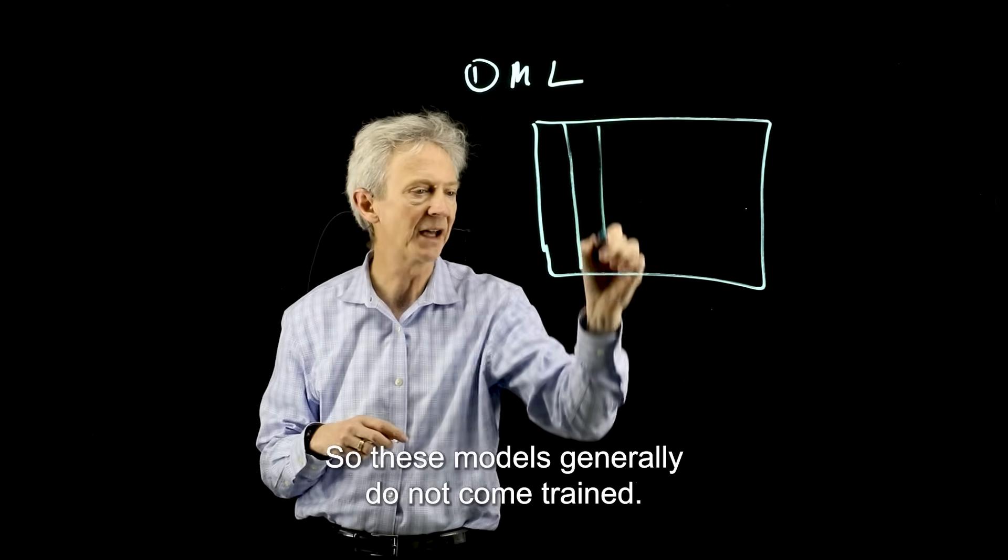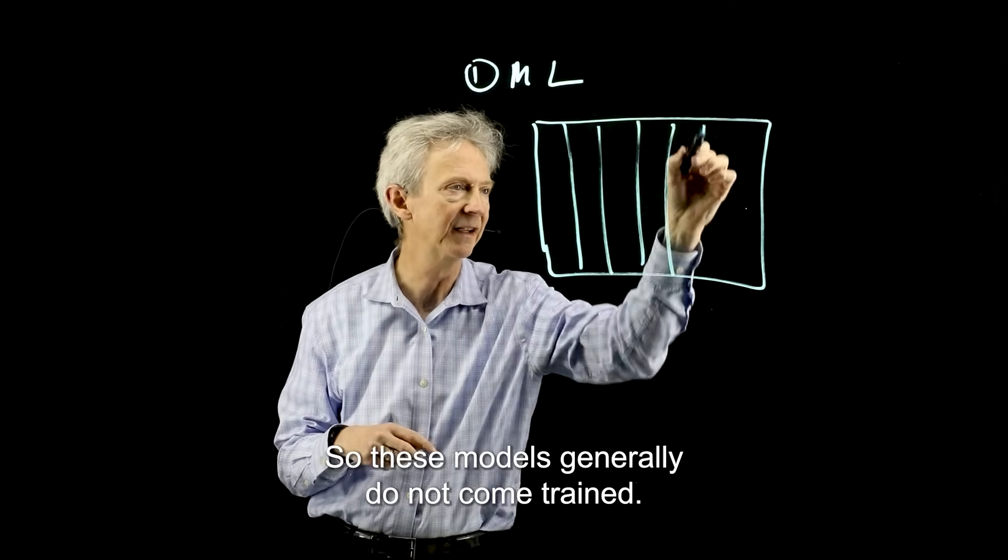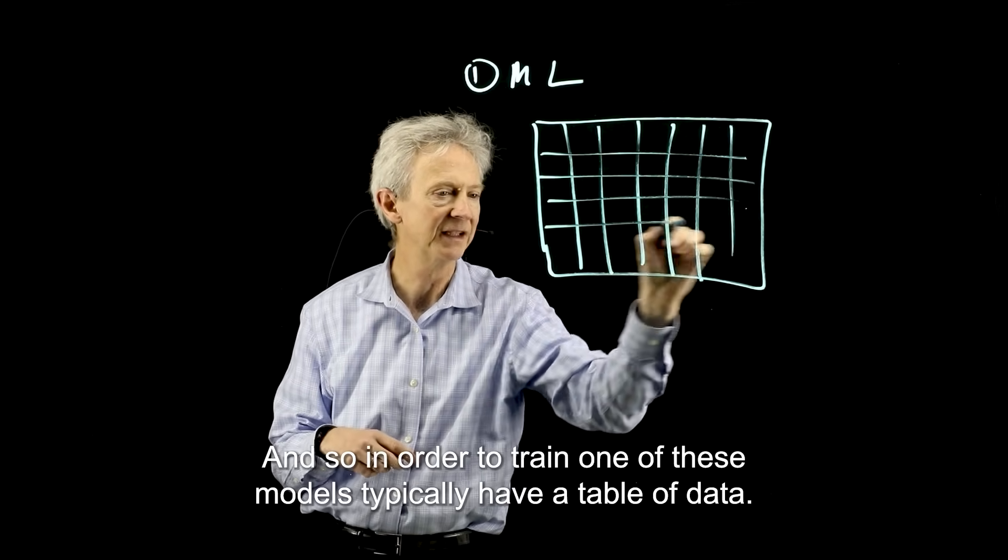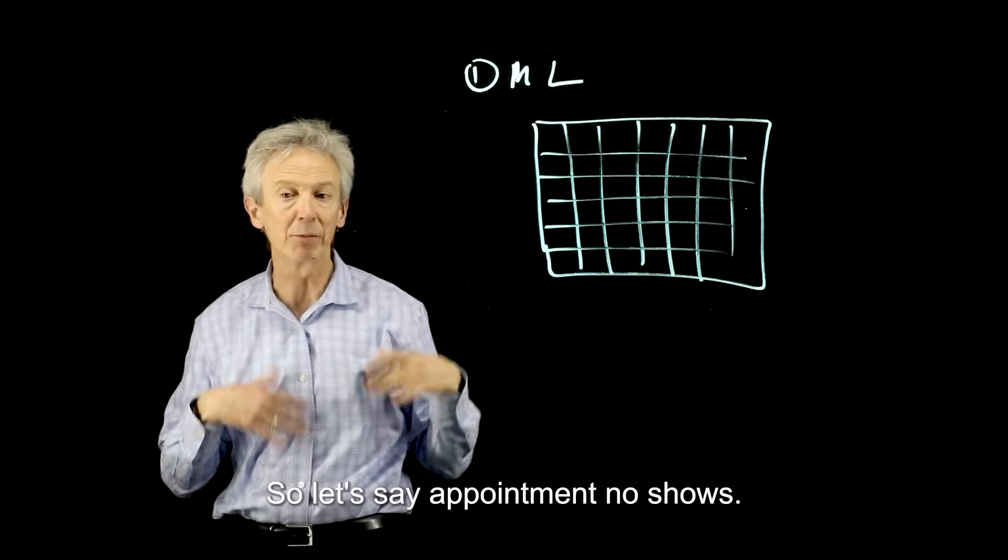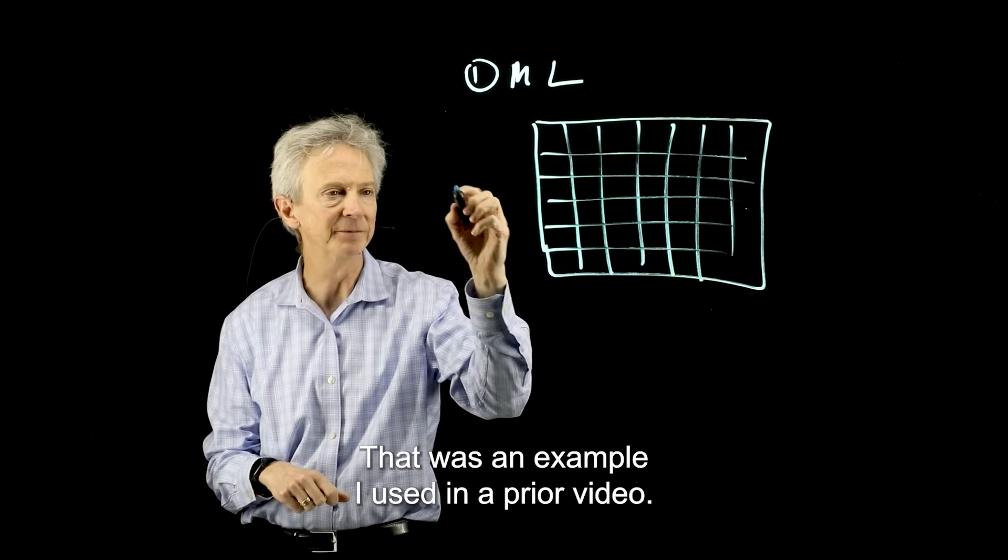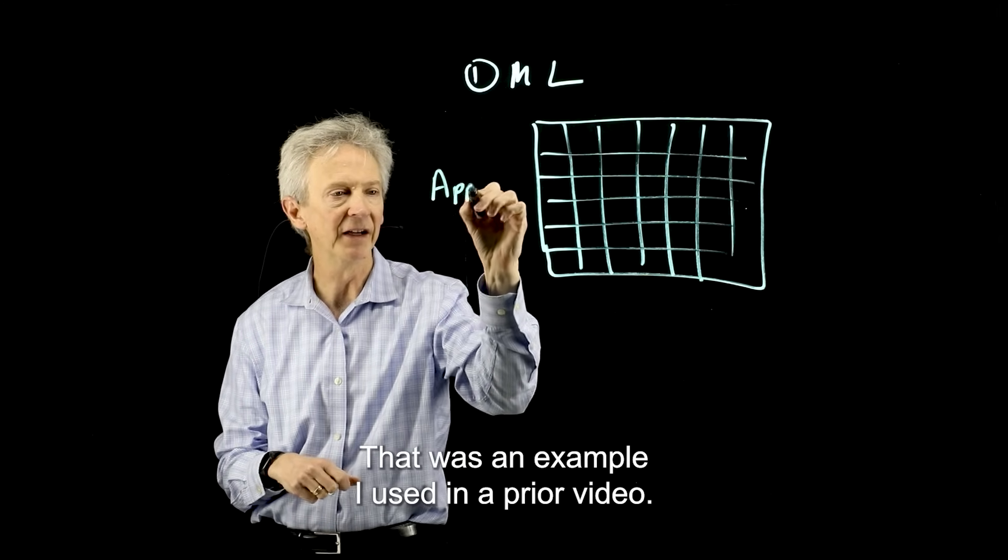These models generally do not come trained. So in order to train one of these models, typically you have a table of data. Let's say appointment no-shows - that was an example I used in a prior video.